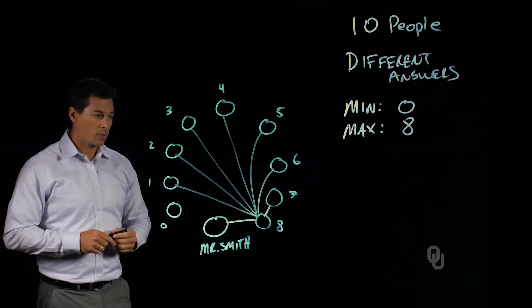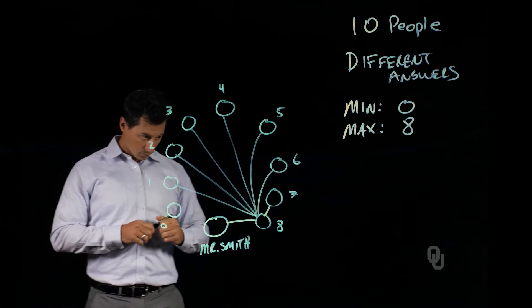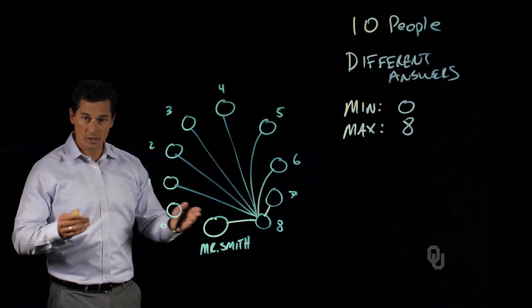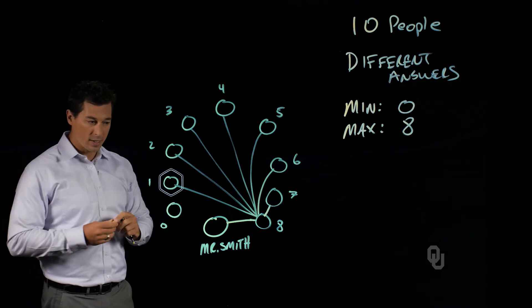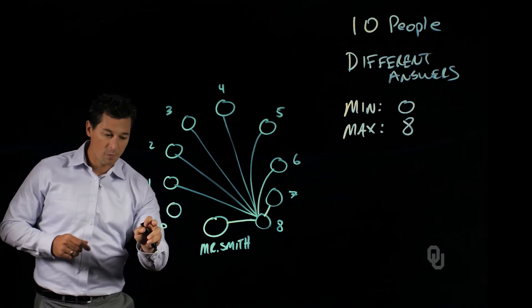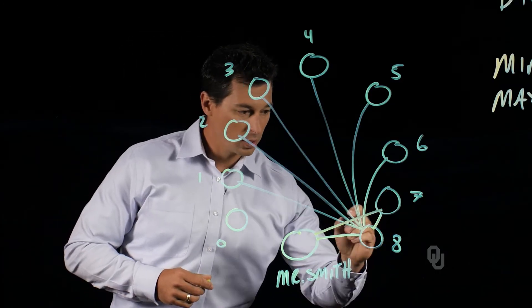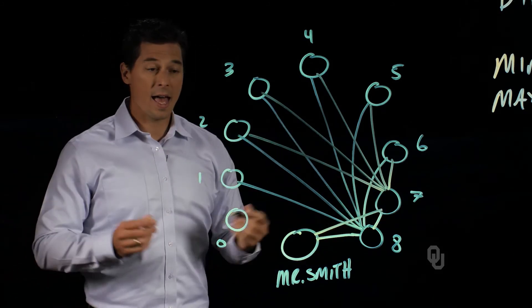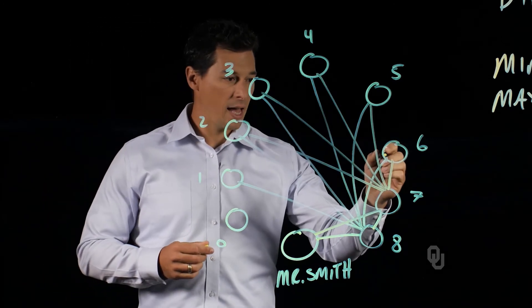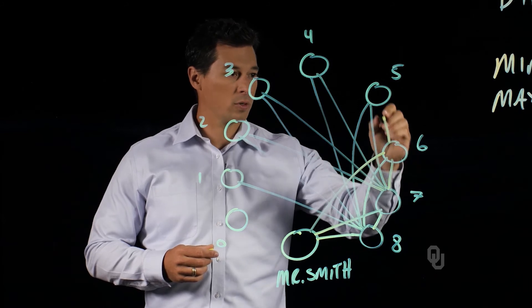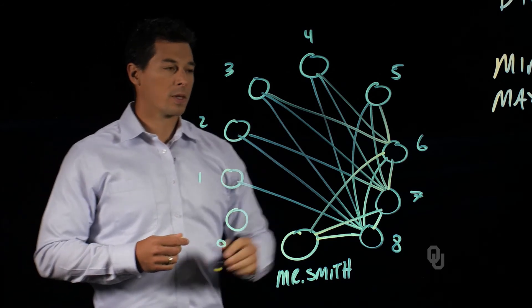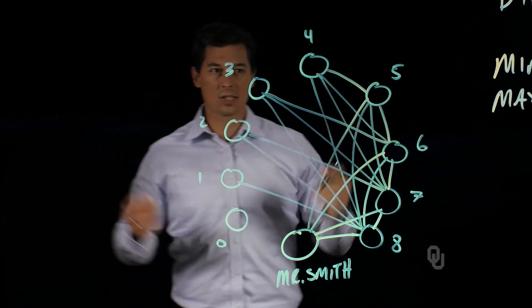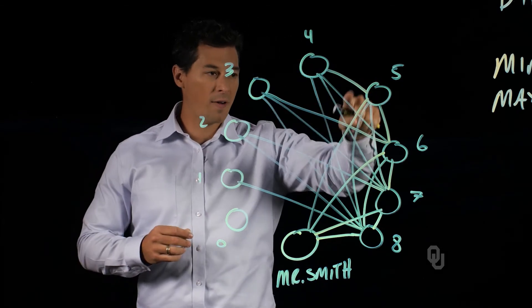Continuing this process: person seven has already shaken hands with person eight, and cannot shake hands with person zero (anti-social) or shake a hand more than their allotted count. So person seven shakes hands with everyone except persons zero and one. Similarly, person six shakes hands with Mr. Smith and persons five, four, and three. Person five shakes hands with Mr. Smith and person four. That gives person four exactly four handshakes.